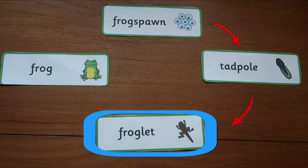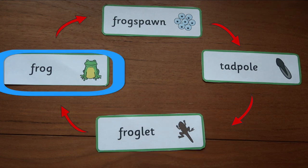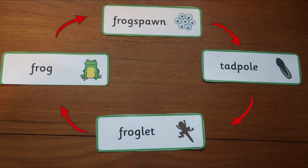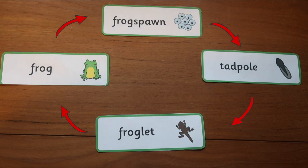Froglets form during the metamorphosis from tadpoles. Frogs are the final stage of their life cycle. Gills and tail have been absorbed and they can now travel onto dry land as amphibious creatures. And there we have it, the life cycle of a frog.